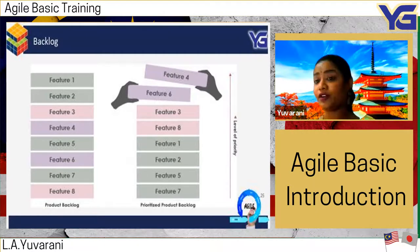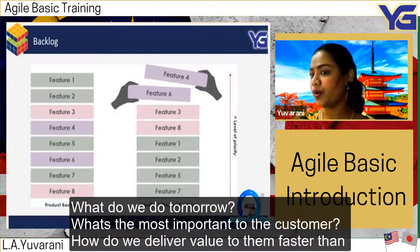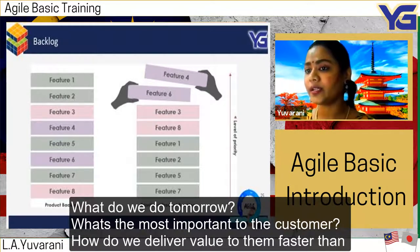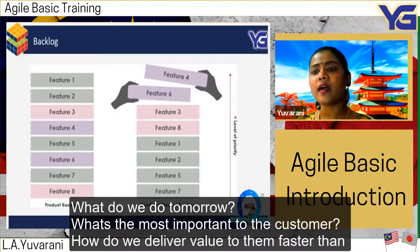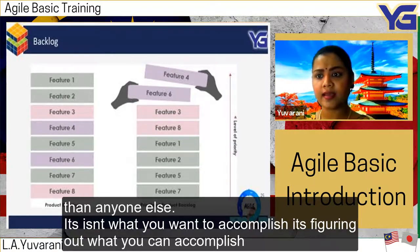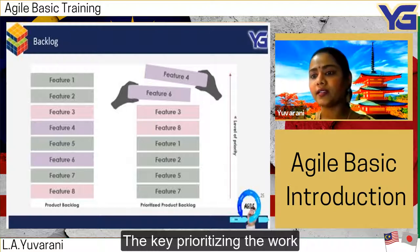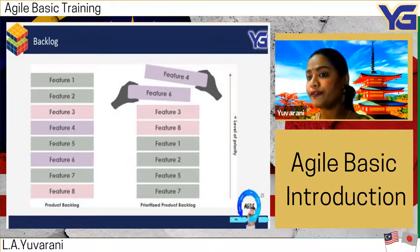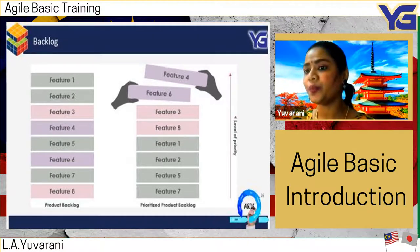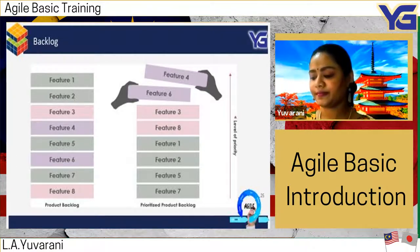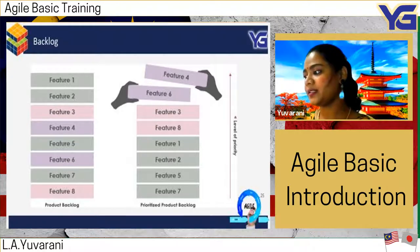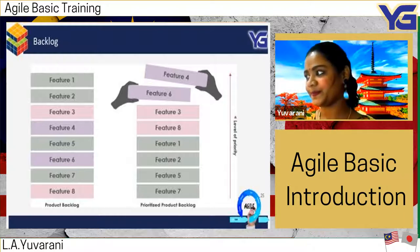From the backlog, ask: what do we do tomorrow, what's most important to the customer, and how do we deliver value faster than anyone else? It's not just about what you want to accomplish — it's figuring out what you can accomplish. This is the key to prioritizing the work, because we don't just have a few backlogs — we have hundreds. We use specific keywords to prioritize the work from the product backlog.